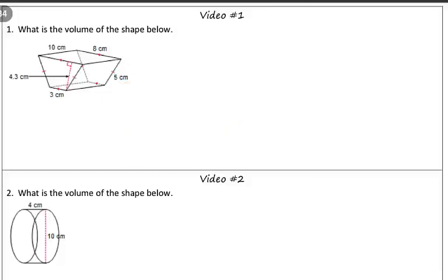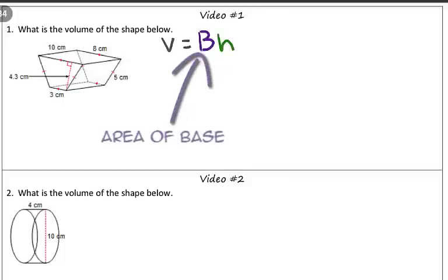So, whenever we want to find the volume of a prism, we know that volume is equal to the area of the base, which we denote big B, times the height. So again, big B stands for the area of the base times the height.